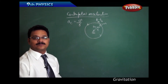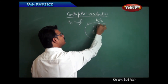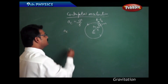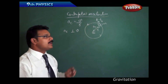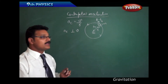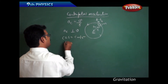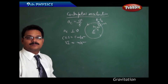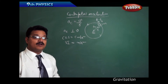Centripetal acceleration AC is perpendicular to velocity, and it is also perpendicular to displacement. Centripetal acceleration always acts towards the center of the circle. Its unit in CGS is centimeters per second squared, and in SI it is meters per second squared.